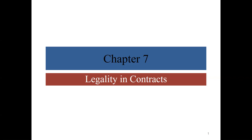We need four things — four ingredients to our contract recipe — in order to end up with a contract. We need to have an agreement, consideration, legal capacity for all parties, and we need legality or legal object in the contract. If we're missing any one of those four items, we don't have a contract.